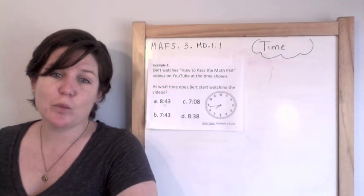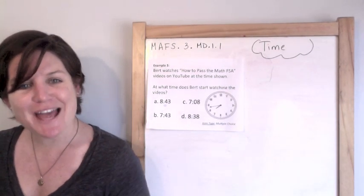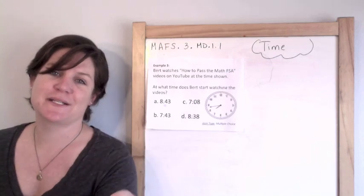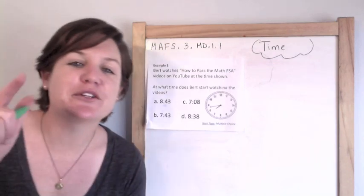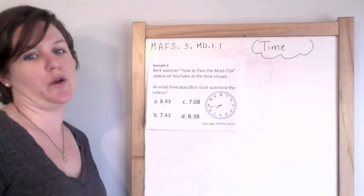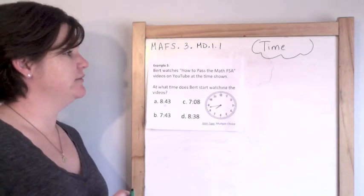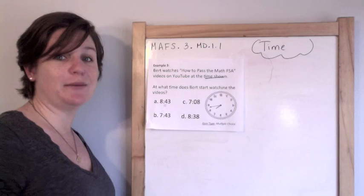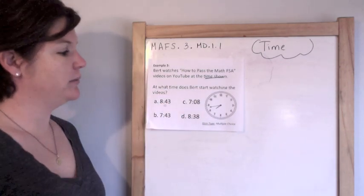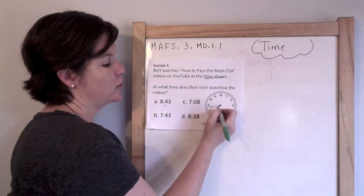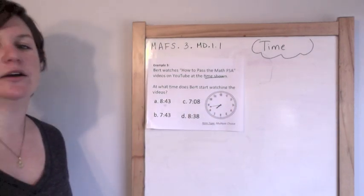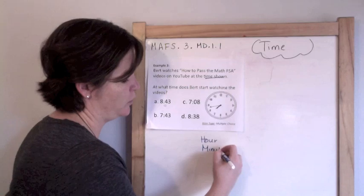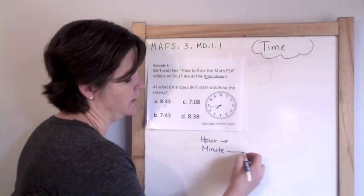Example 3. Bert watches How to Pass the Math FSA videos on YouTube at the time shown. Bert, you're awesome, dude — tell your friend Ernie you know what's going on. At what time does Bert start watching the videos? So here's the clock. I just have to see what the time is. This is an easier type of question. Remember that my hour hand is my short hand and my minute hand is my long hand. The way I teach kids to remember this is that 'hour' is shorter than the word 'minute,' so the hour hand is shorter than the minute hand.